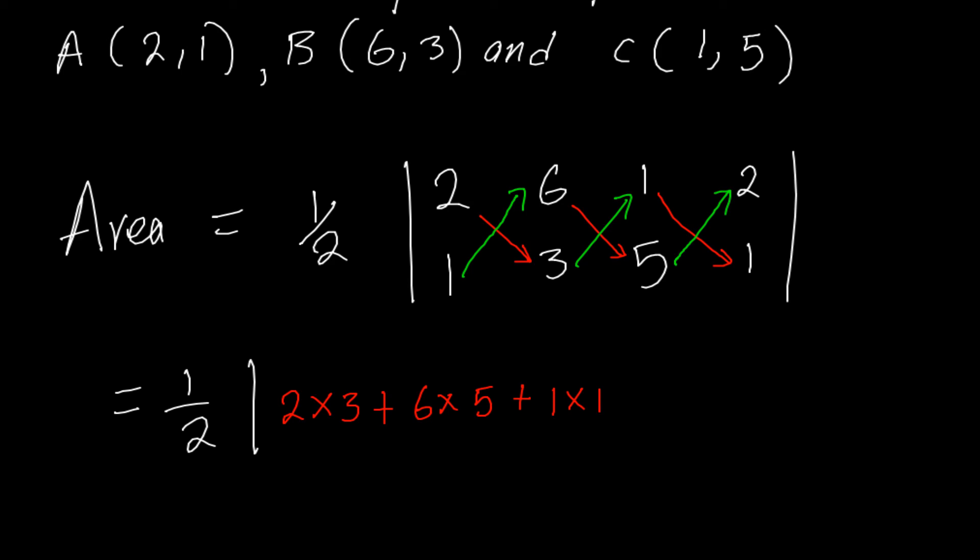Then for the green part, we subtract minus 1 times 6, then minus 3 times 1, and then minus 5 times 2. And that is it, so the remaining part is just simplifying.